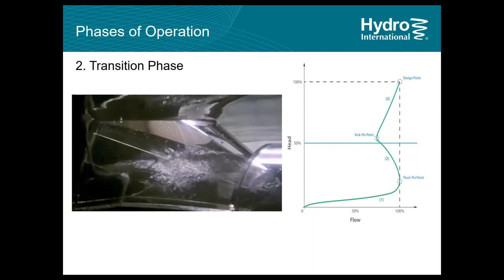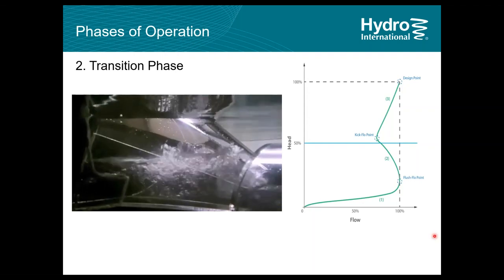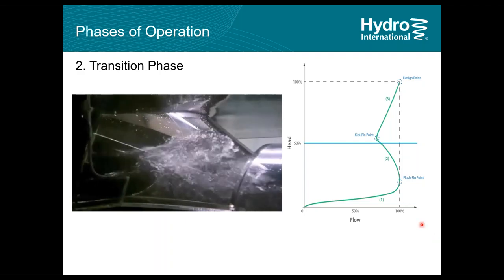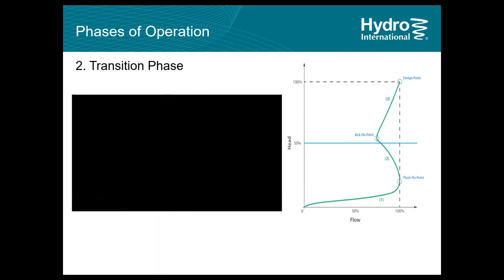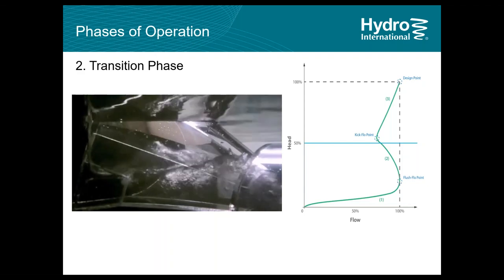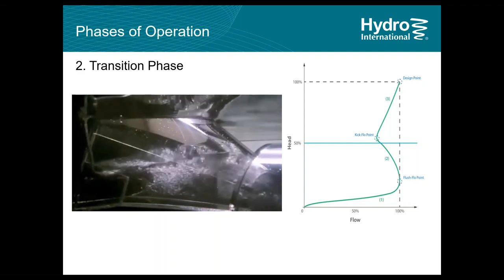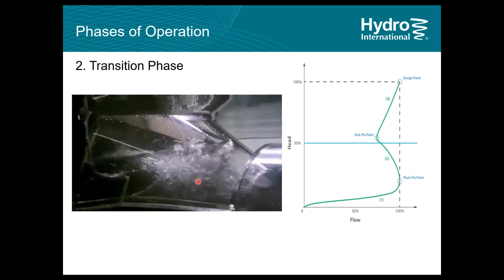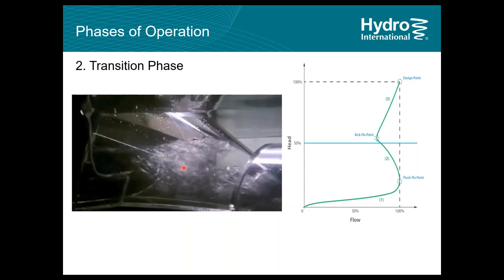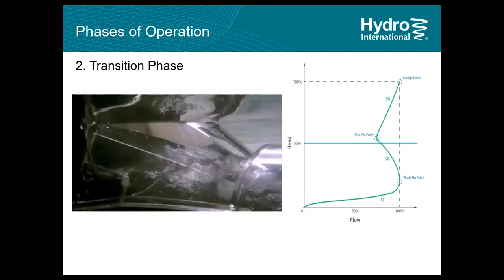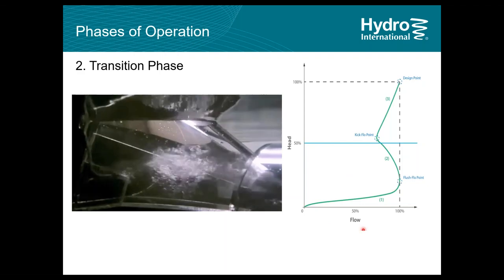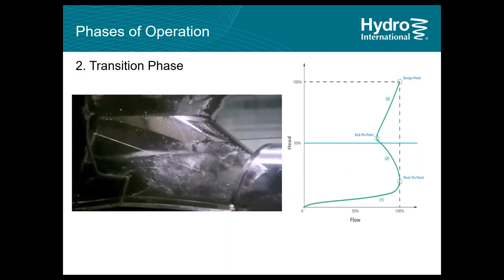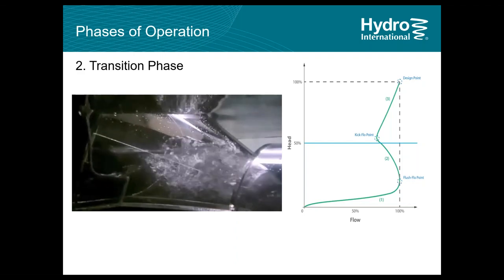The flush flow point starts the transition phase. As inflow increases, head increases and discharge flow is throttled. Turbine and flow patterns develop as the vortex continually forms and collapses. Trapped air pockets produce back pressure which works against the flow. At the kick flow point, the vortex starts to take its form and the discharge flow rate increases as it approaches the design point.